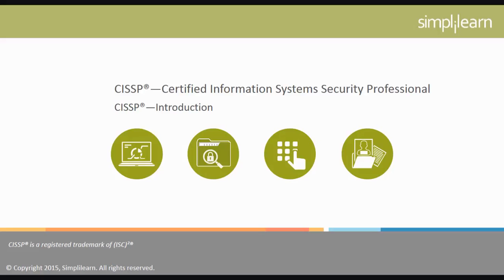Hello and welcome to the CISSP certification course offered by SimpliLearn. Certified Information Systems Security Professional, CISSP, is an autonomous information security certification governed by the International Information Systems Security Certification Consortium, or ISC². A CISSP is an information assurance professional who defines the architecture, design, management, and controls that assure the security of business environments.